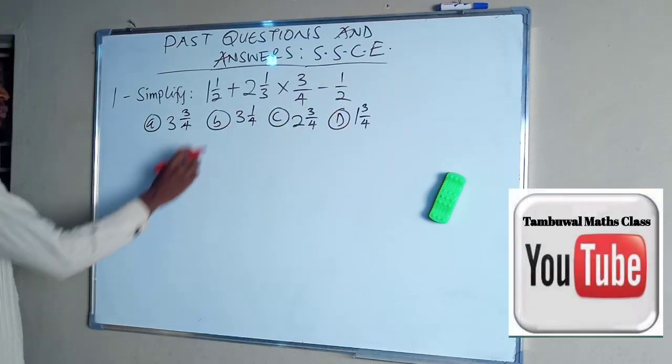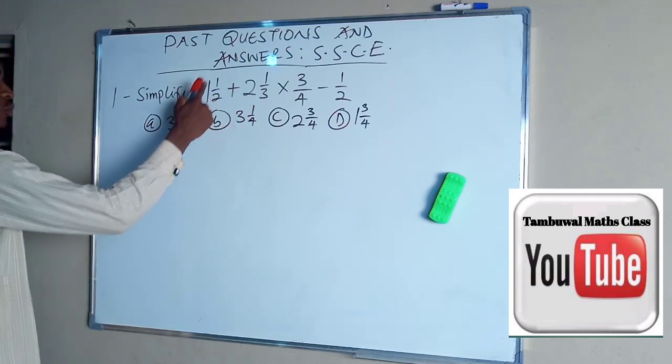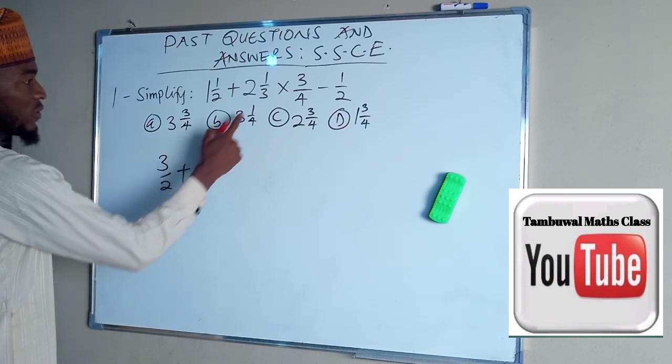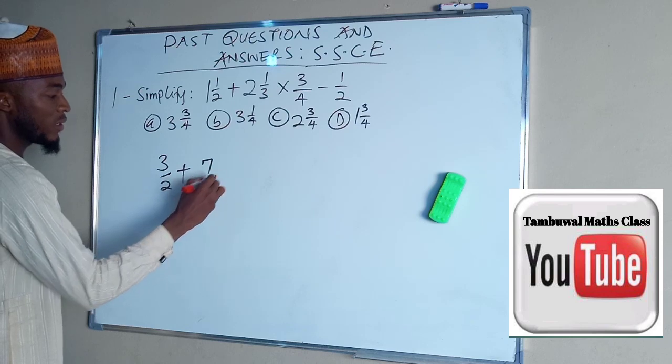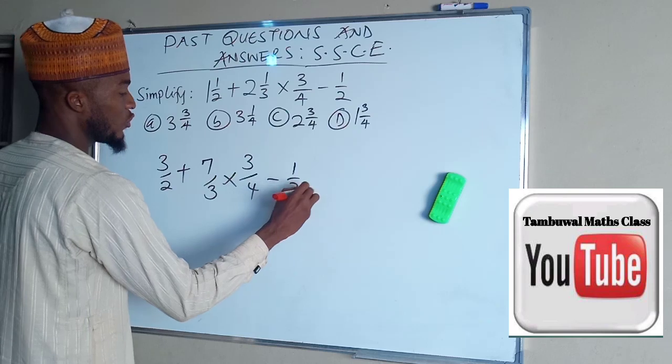We should simplify this. Now we have to transform each one of this into improper fraction. For this one, 2 times 1, 2 plus 1 is 3 divided by 2 plus, this times this is 6 plus this is 7 divided by 3, multiplied by 3 divided by 4, minus 1 over 2.